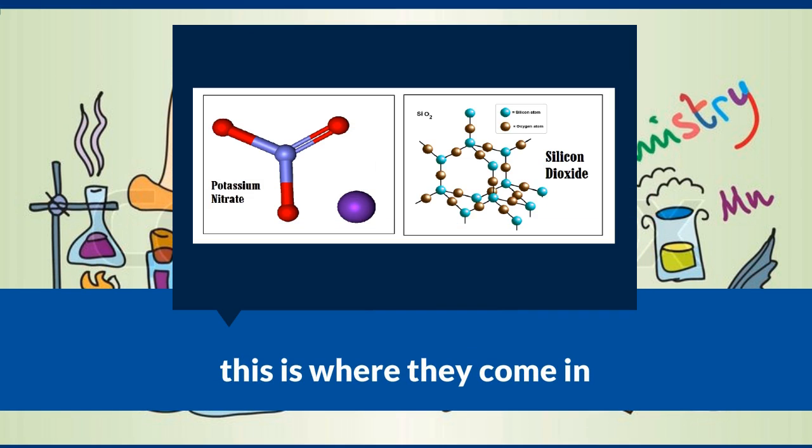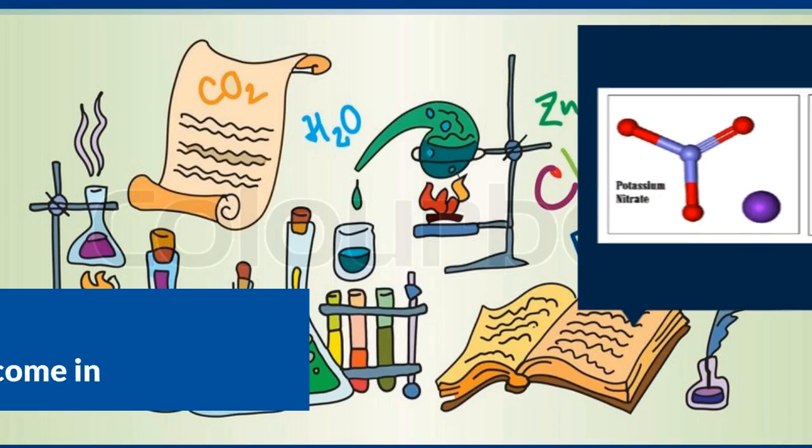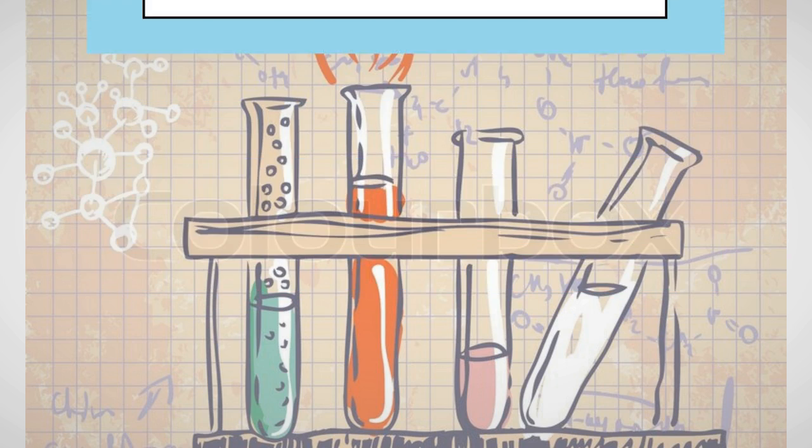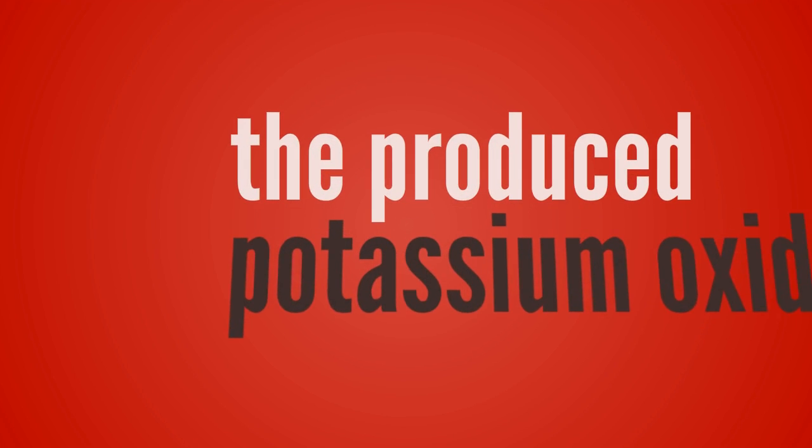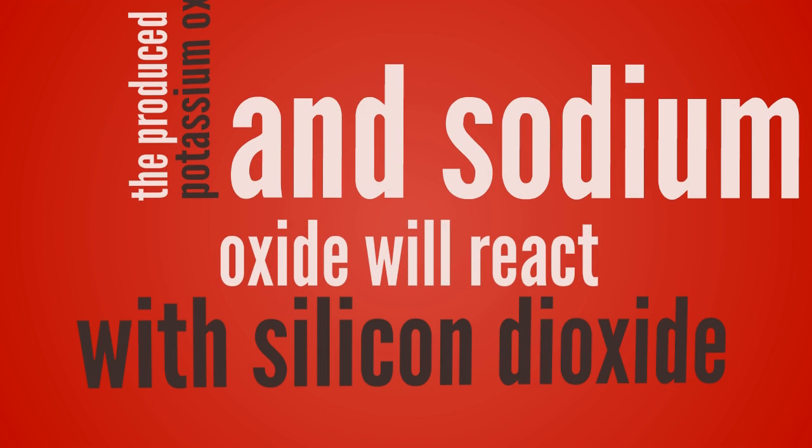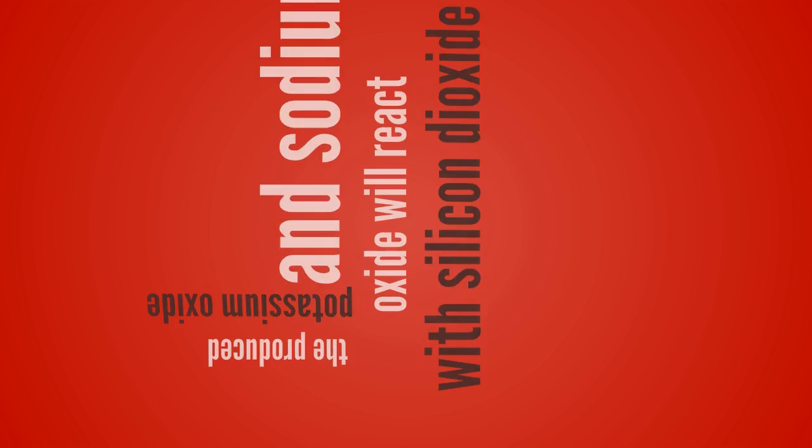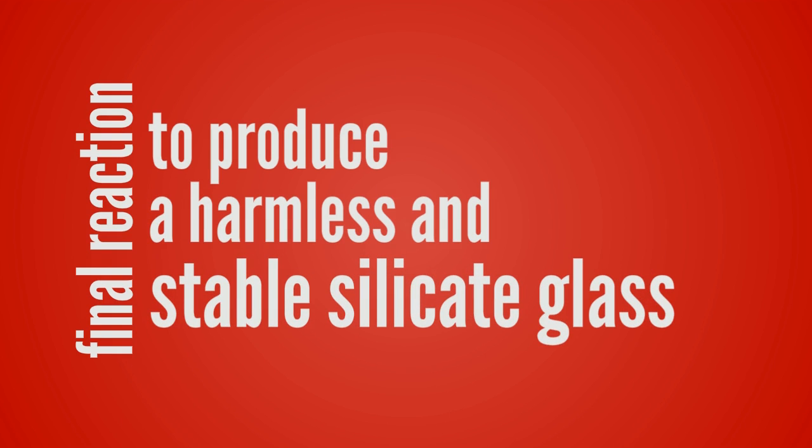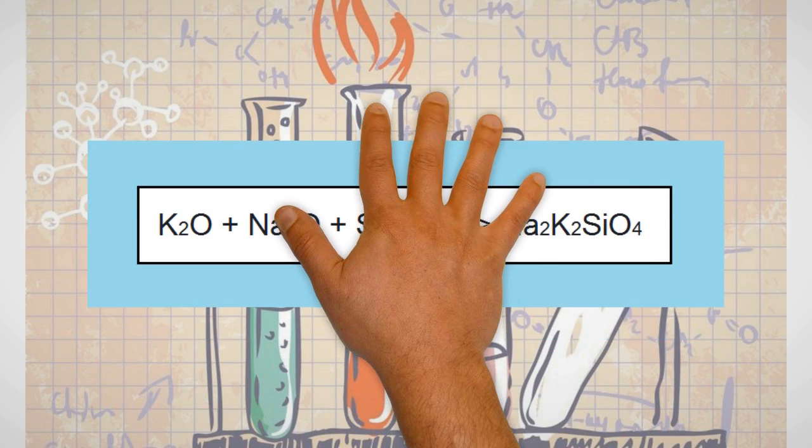This is where the potassium nitrate and the silicon dioxide comes in. First, the sodium reacts with the potassium nitrate to produce additional nitrogen gas. The produced potassium oxide and the sodium oxide will react with the silicon dioxide in a final reaction to produce a harmless and stable silicate glass called the alkaline silicate glass.